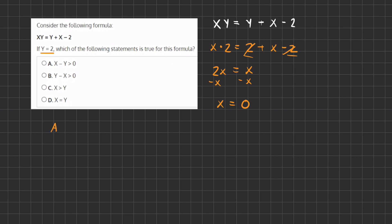Now let's take a look at our options. We have option A which states x minus y is greater than 0. So x is 0 minus y which is 2 is greater than 0. If we simplify we have negative 2 is greater than 0 which is an incorrect statement and therefore A is incorrect.